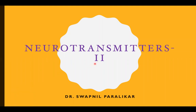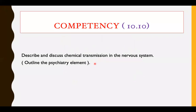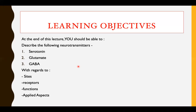Good day, dear students. This is the second video on neurotransmitters. In this video, I'll be talking about serotonin, glutamate, and GABA. The competency is 10.10 — relating to neurophysiology — which is to describe and discuss chemical transmission in the nervous system, explaining the psychiatric element. The learning objectives are that you should be able to describe serotonin, glutamate, and GABA with regards to their sites, receptors, functions, and applied aspects.